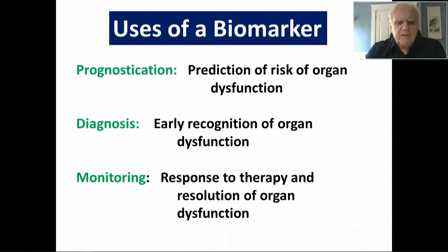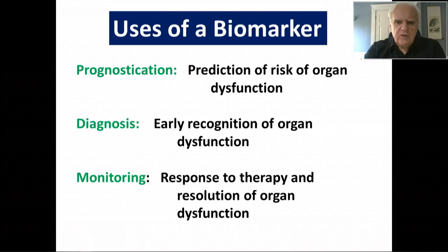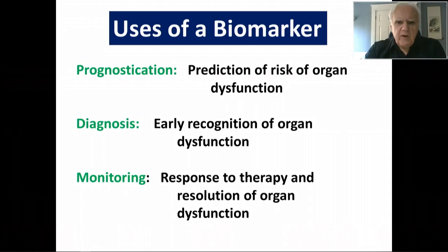When we think of the uses of biomarkers in medicine, they really subserve three potential broad roles. They may help us prognosticate — a biomarker may tell us whether or not a patient with a particular disease is likely to have a favorable or an unfavorable course. In talking about sepsis, we are talking about the prediction of risk of organ dysfunction, but that presupposes that we can do something about modifying that risk. And so in many ways, the more important use of a biomarker is in diagnosis.